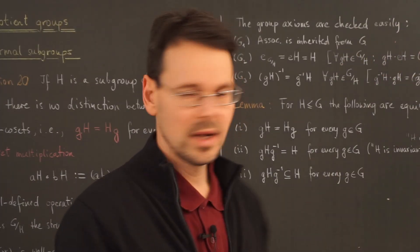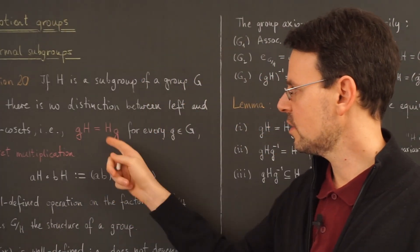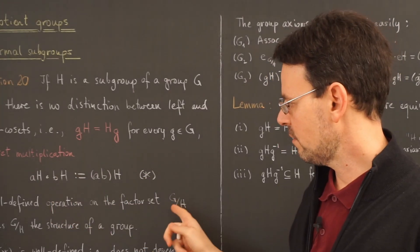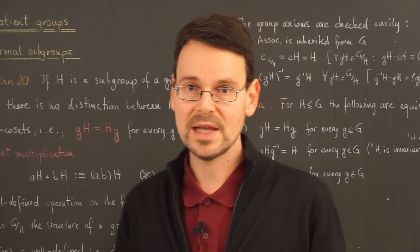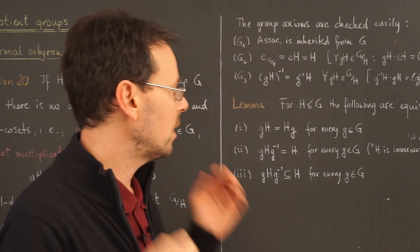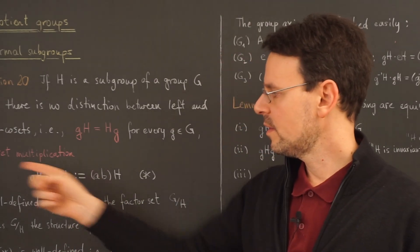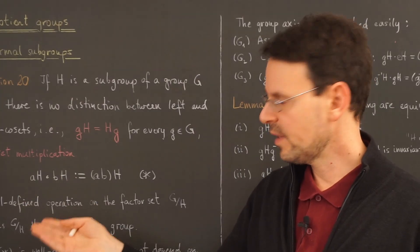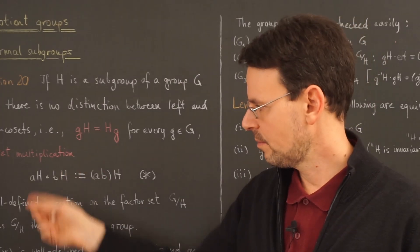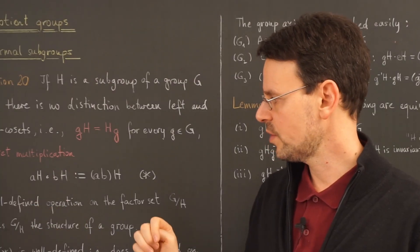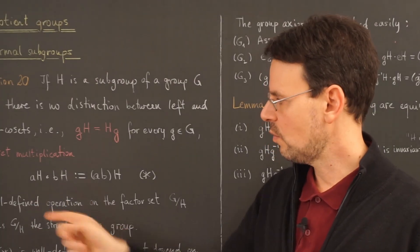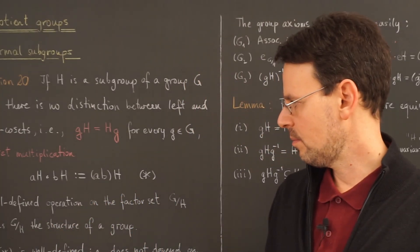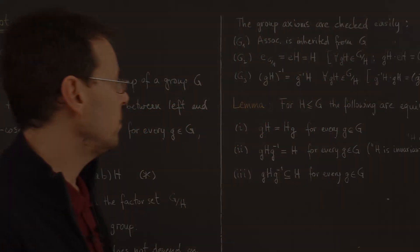So we have shown that if the left and right coset condition is satisfied, coset multiplication is well-defined and the factor set becomes a group itself. As stressed many times before, this is one of the most important constructions of elementary abstract algebra: taking the quotient group. It's not entirely clear yet why, but it will become evident in the next few weeks.